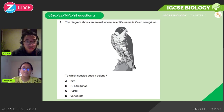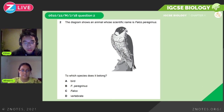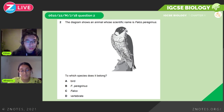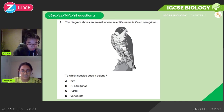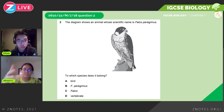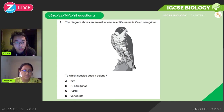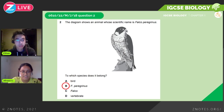Sample question two: an animal has the scientific name Falco peregrinus. To which species does the bird belong? Remember, the first part of a binomial name is the genus and the second is the species. Falco is the genus and peregrinus is the species. 'Bird' and 'vertebrate' are not species names. So the answer is F. peregrinus — the species name.